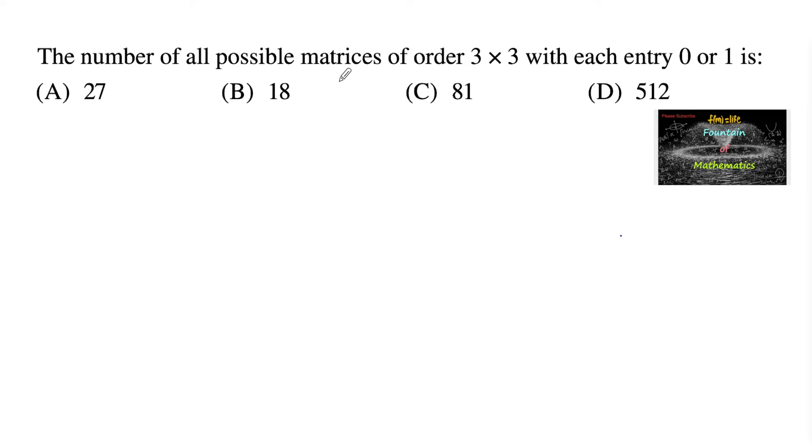The number of all possible matrices of order 3 by 3 with each entry either 0 or 1. Let us consider a matrix A whose element is Aij with an order 3 by 3, so we can say that i and j can be considered from 1 to 3.